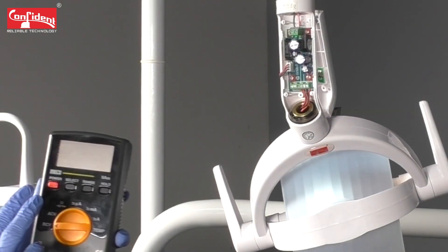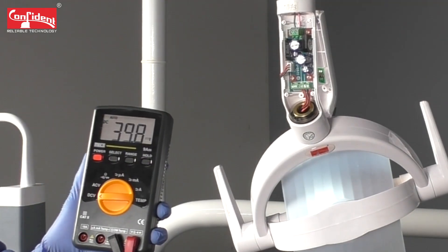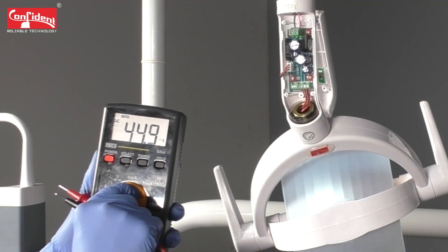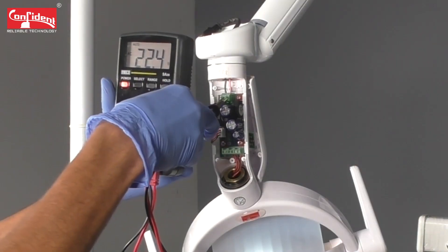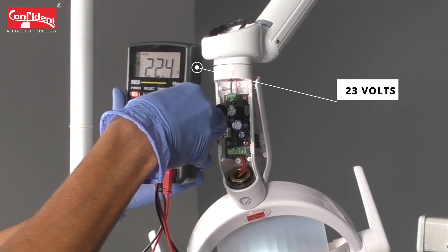At first, you need to check for the proper power supply coming to the panel using a multimeter. Power on the multimeter, set the input mode to AC and check for the supply. You should get 23 volts as the reading.